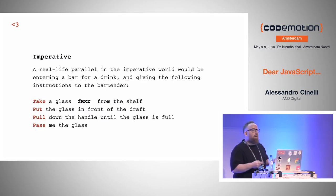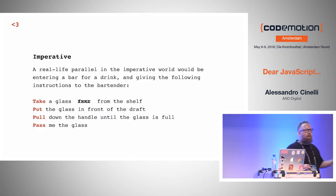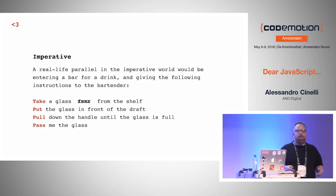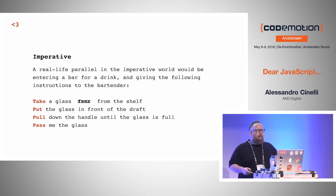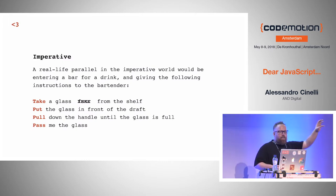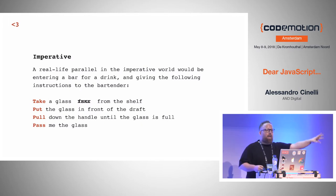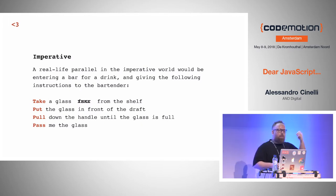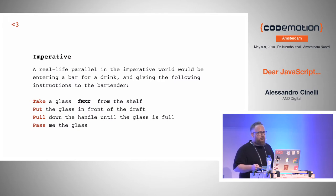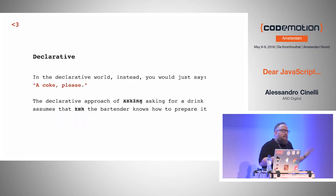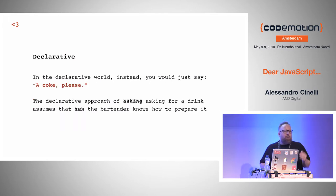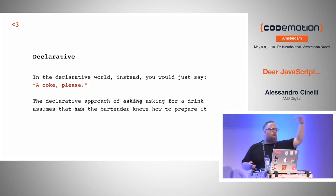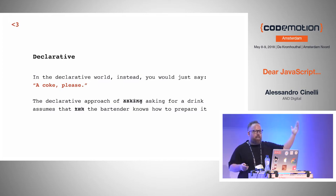Let's make a real-life example. If you're going to a bar or a pub and you want a drink, with an imperative approach you'd tell the bartender: take a glass from the shelves, put the glass in front of the draft, pull down the handle until the glass is full, and pass me the glass. In a declarative way, the bartender knows how to do stuff, so you can just ask for a Coke, please, or a drink in general.